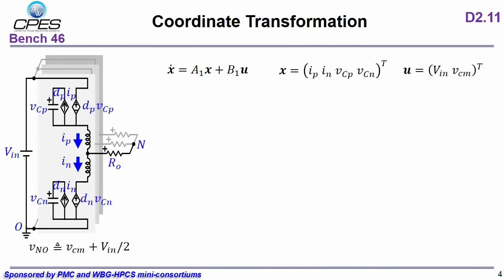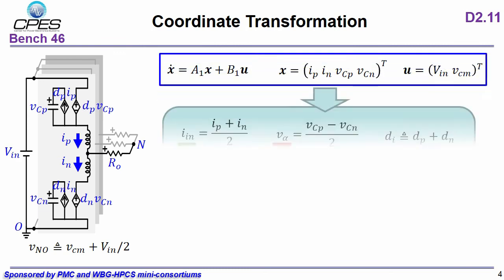Based on the state plane analysis, we can do a coordinate transformation. Here shows the original state equation for MMC. The state is two inductor current, two capacitor voltage, and the excitation is the input voltage.